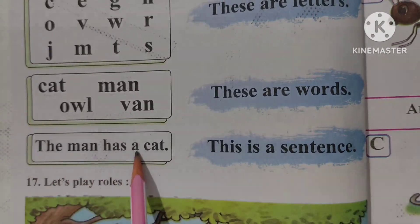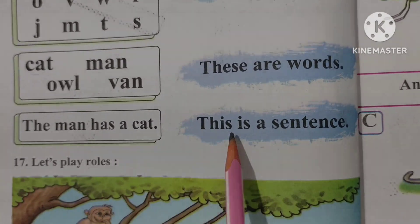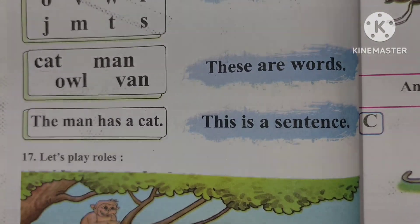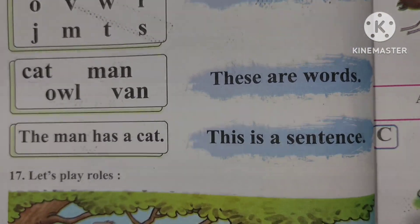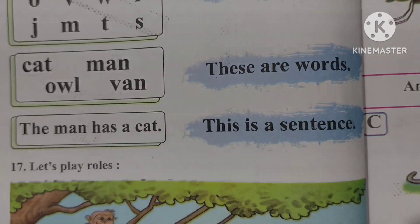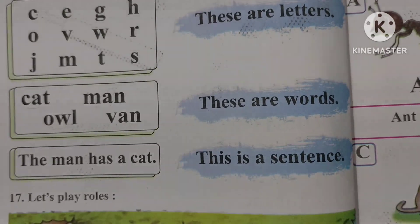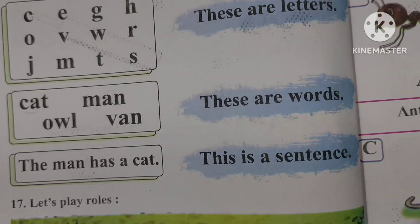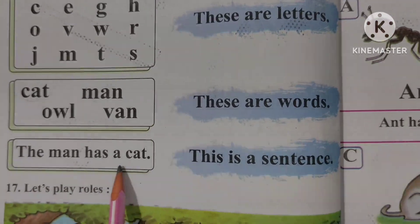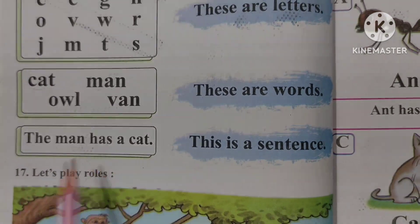The man has a cat. This is a sentence. Sentence meaning a complete thought. As the words make a sentence. When the words combine, it becomes a sentence. The man has a cat. This is a sentence.